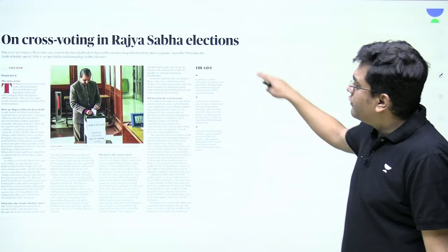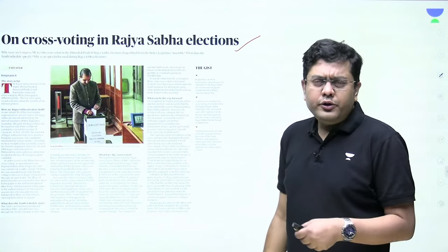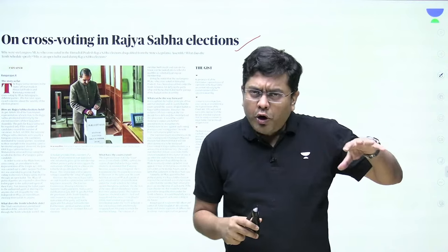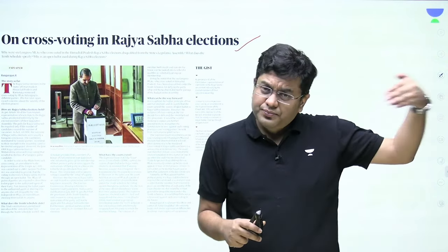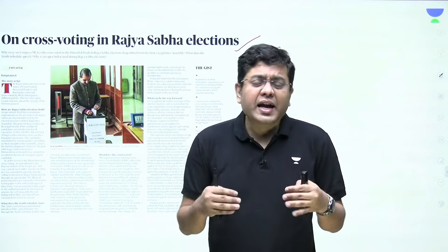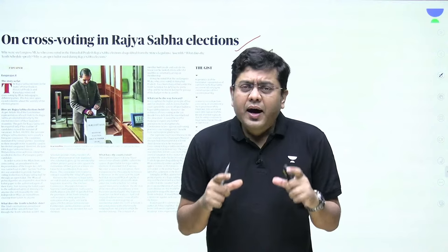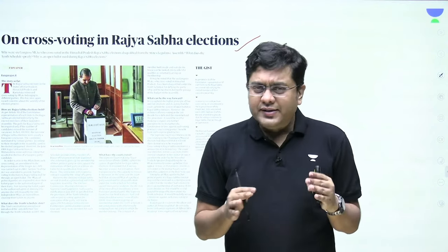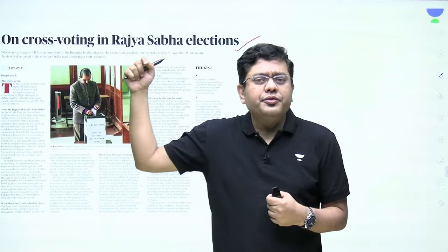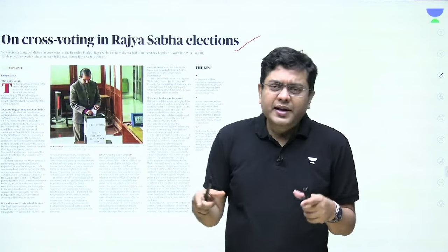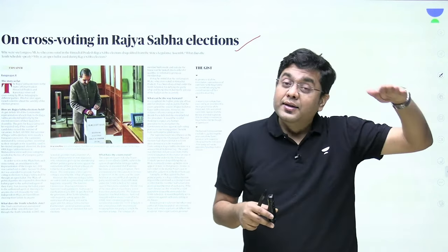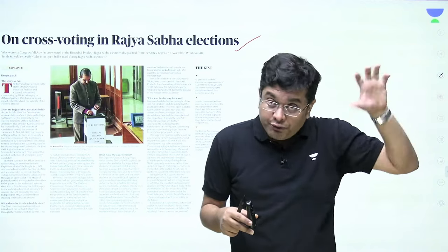The third article is on cross-voting in Rajya Sabha elections. Recently conducted Rajya Sabha elections in various states — Himachal Pradesh, Karnataka, Uttar Pradesh — were full of cross-voting instances. Rajya Sabha elections are held in an indirect manner: citizens don't elect Rajya Sabha representatives directly. Elections are done in the respective state legislatures, and the number of seats a state gets depends on its population.